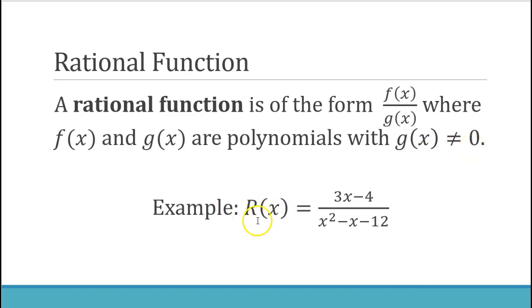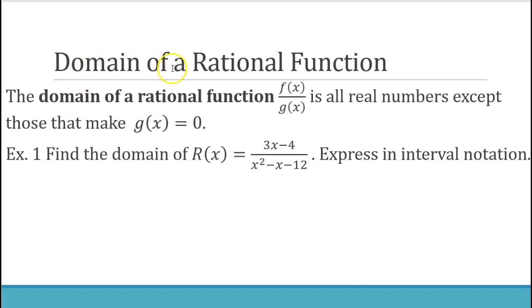For example, we have the rational function r(x) equals (3x minus 4) divided by (x squared minus x minus 12). The domain of a rational function f(x) divided by g(x) is all real numbers except those that make g(x) equal to zero, because dividing by zero creates an undefined situation.